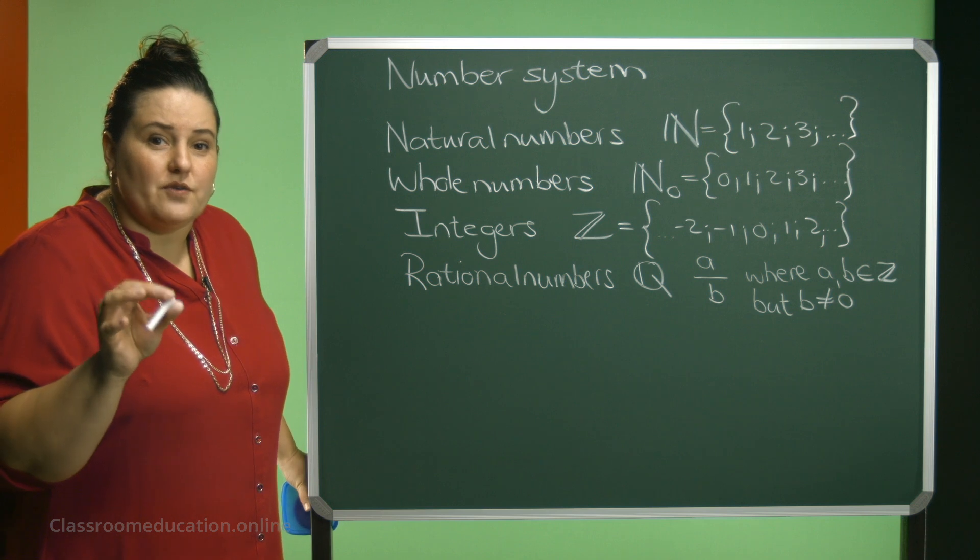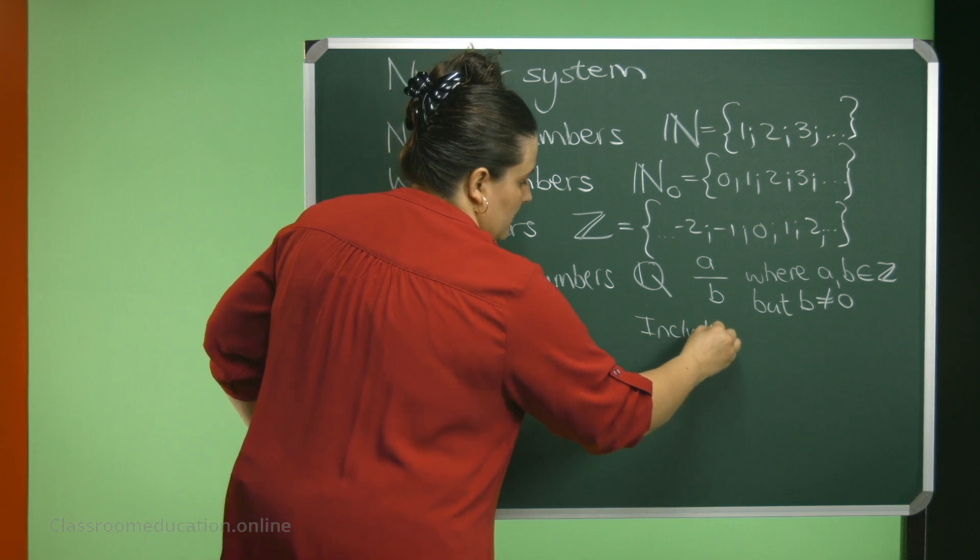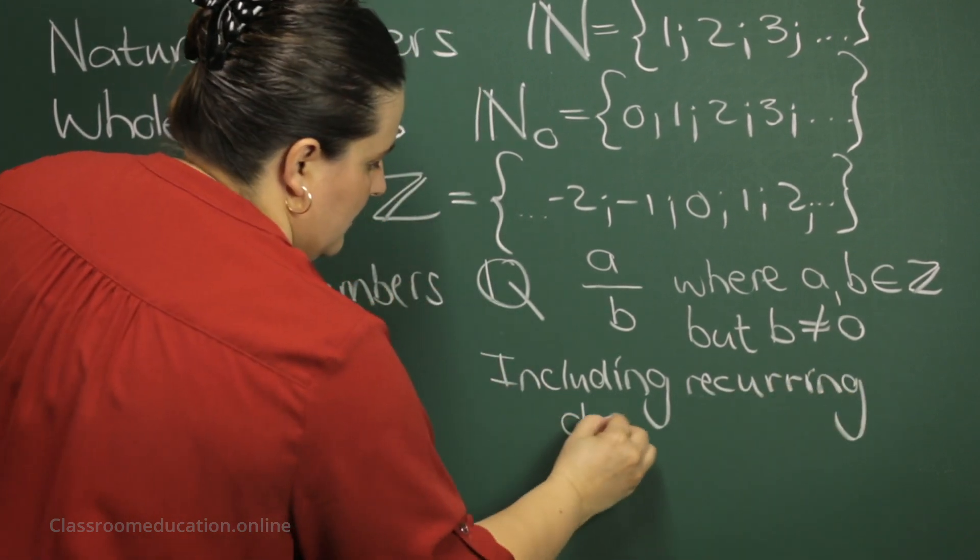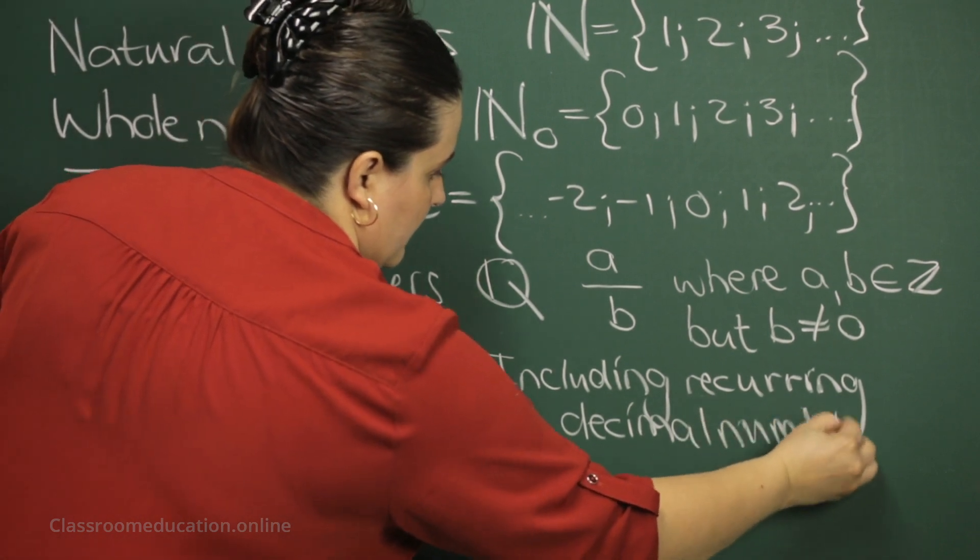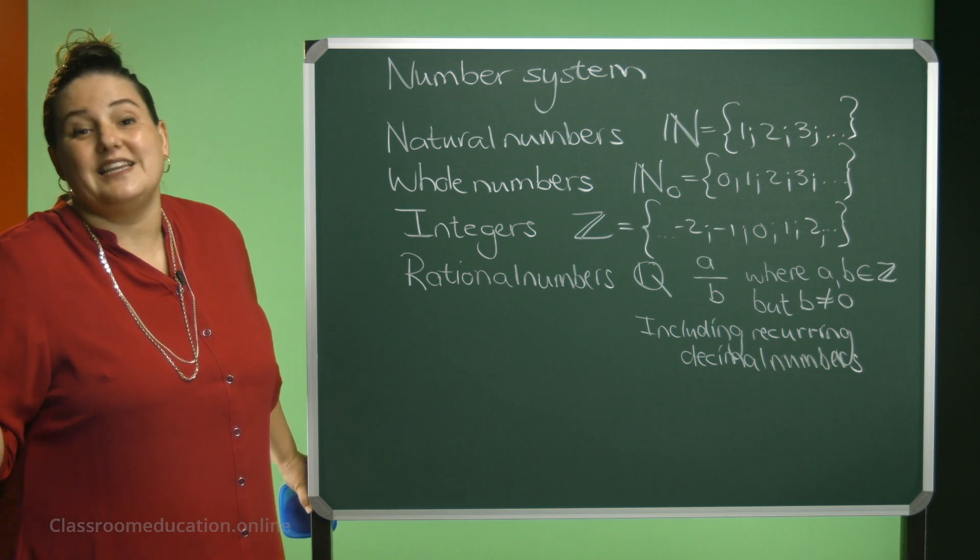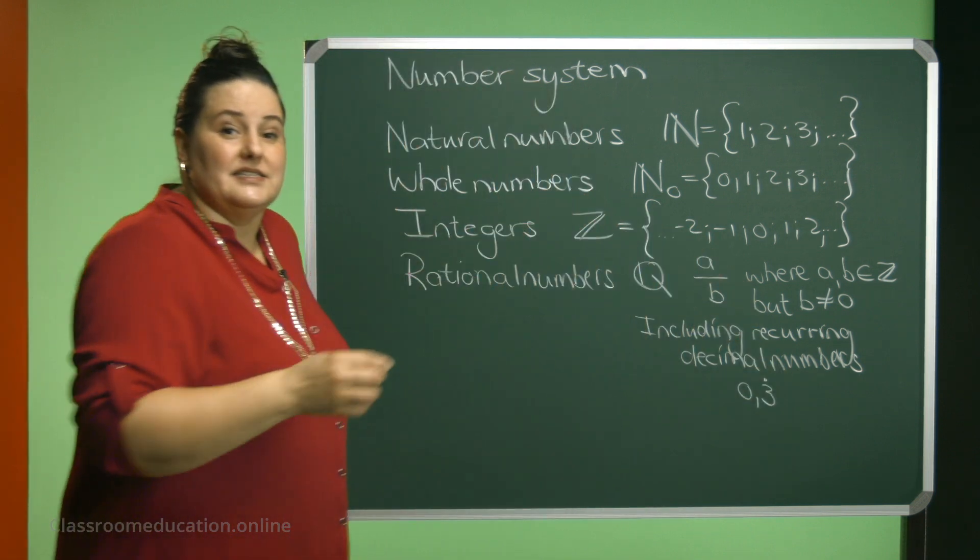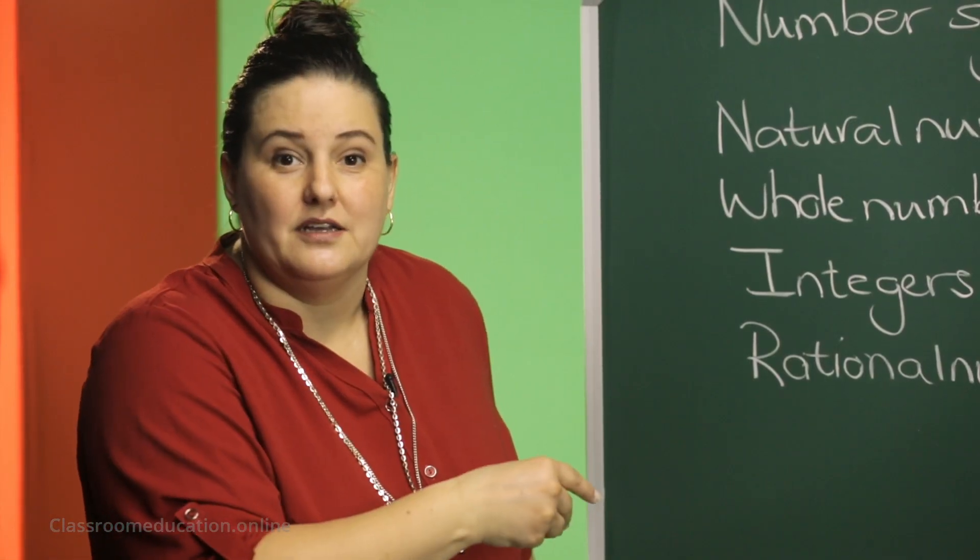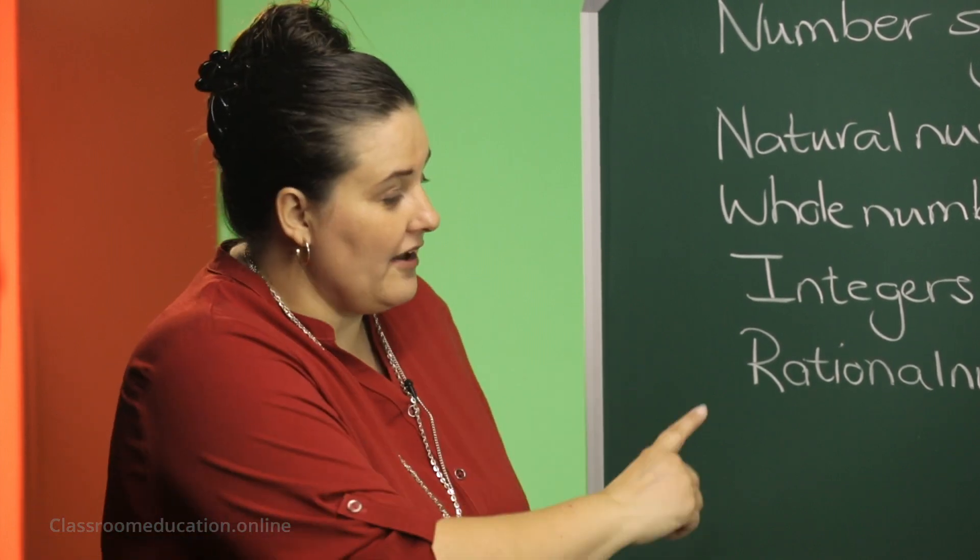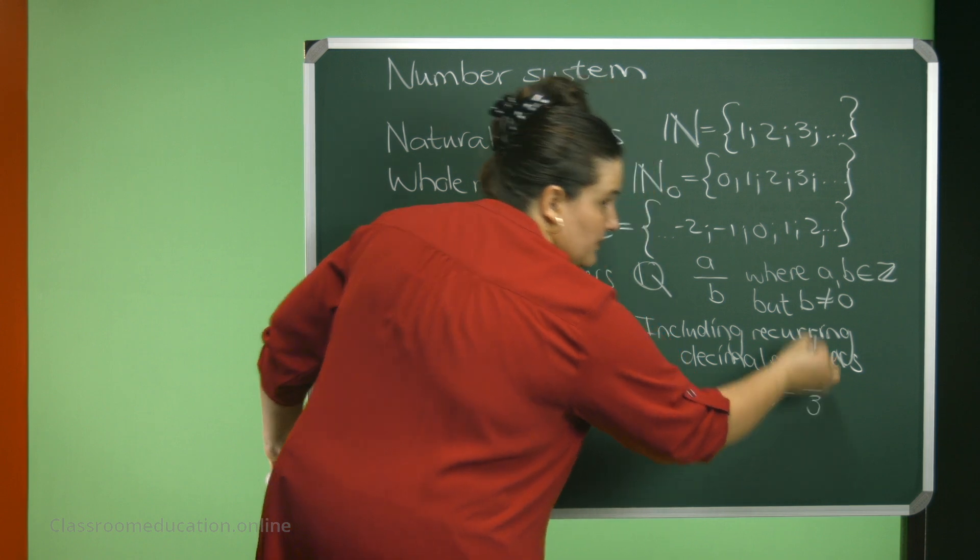Now, this also includes recurring decimal numbers. If I look at an example of a recurring decimal number, I can maybe have a look at an example as 0.3 recurring. 0.3 recurring can be written as a fraction. You need to watch the video following this one, and then you'll understand how we can do that. But 0.3 recurring is the same as one third.